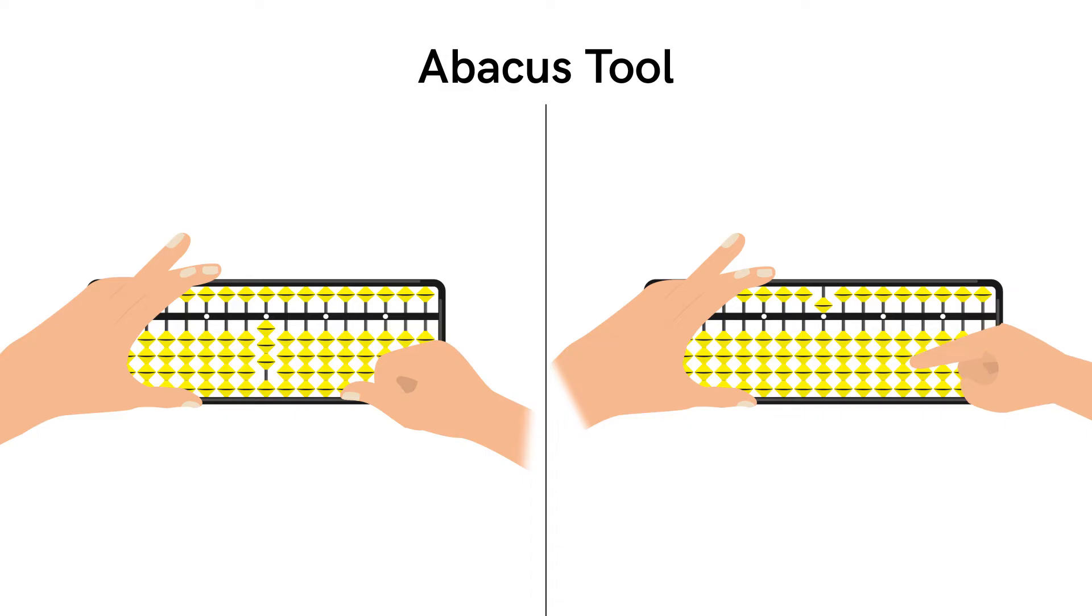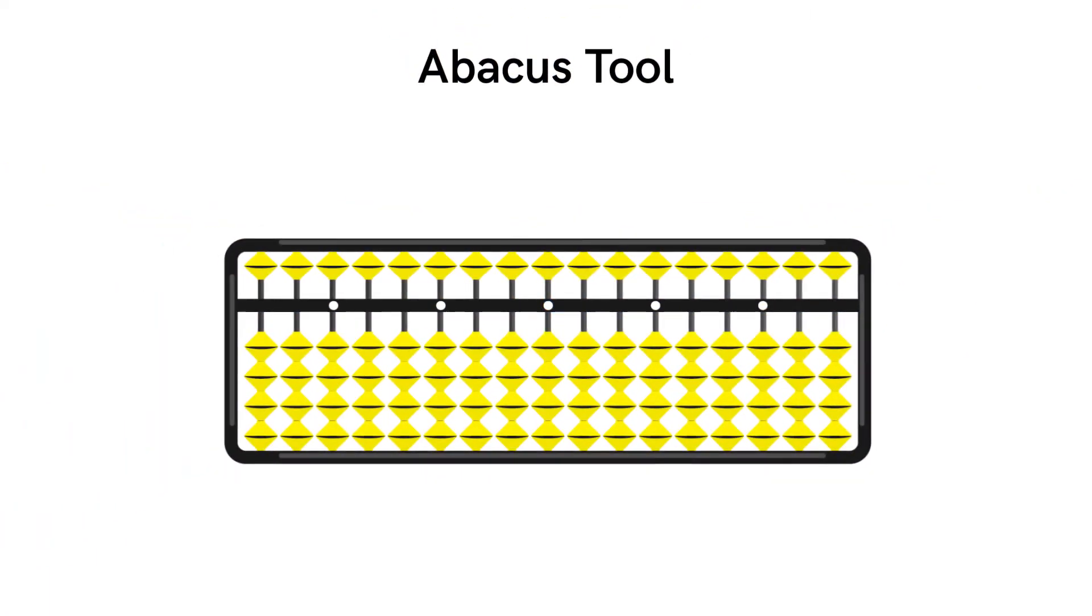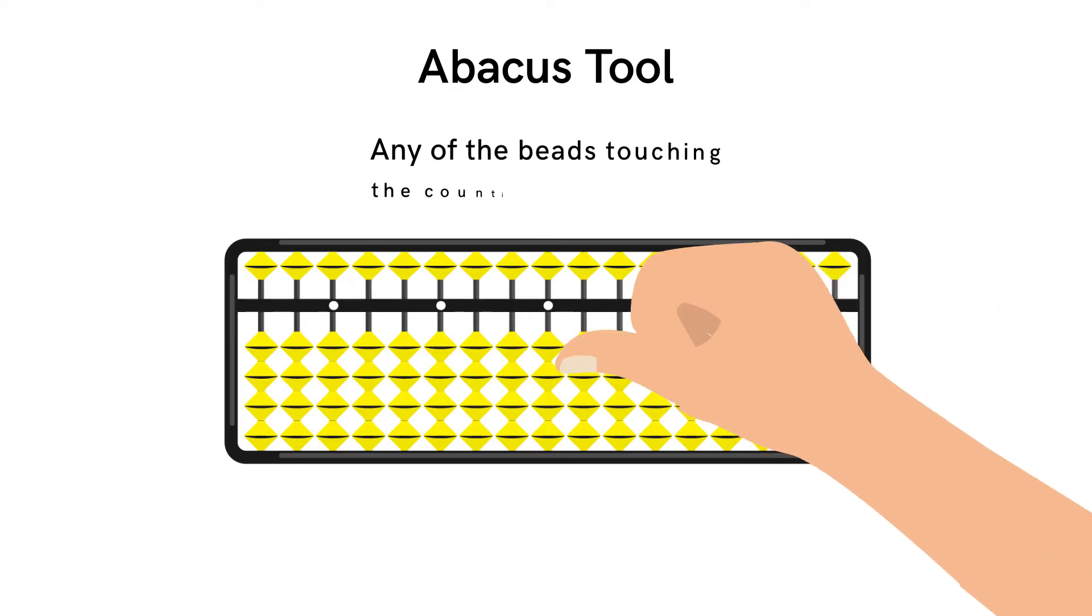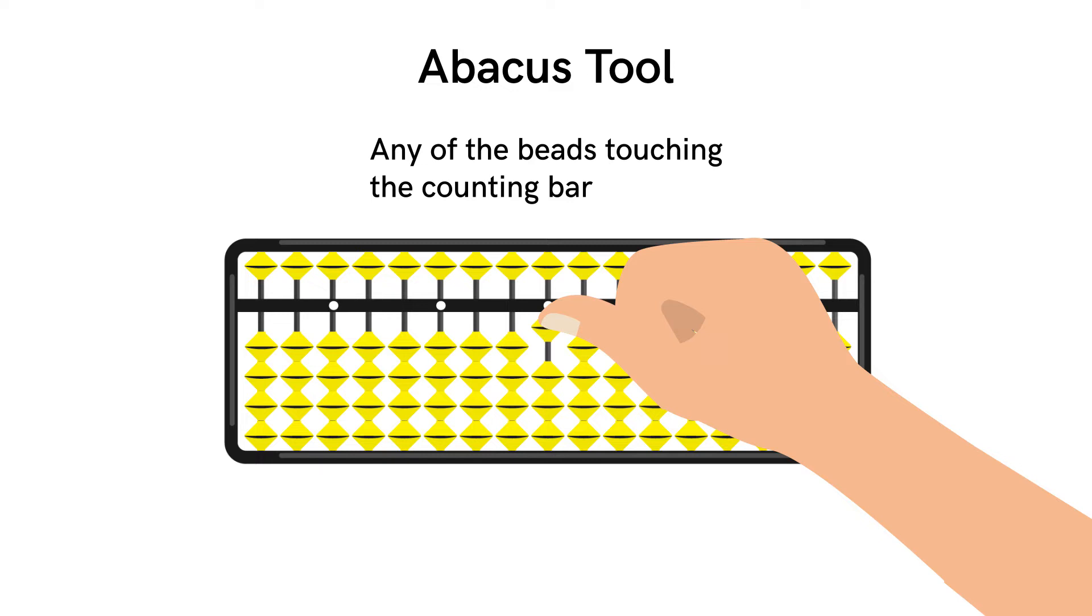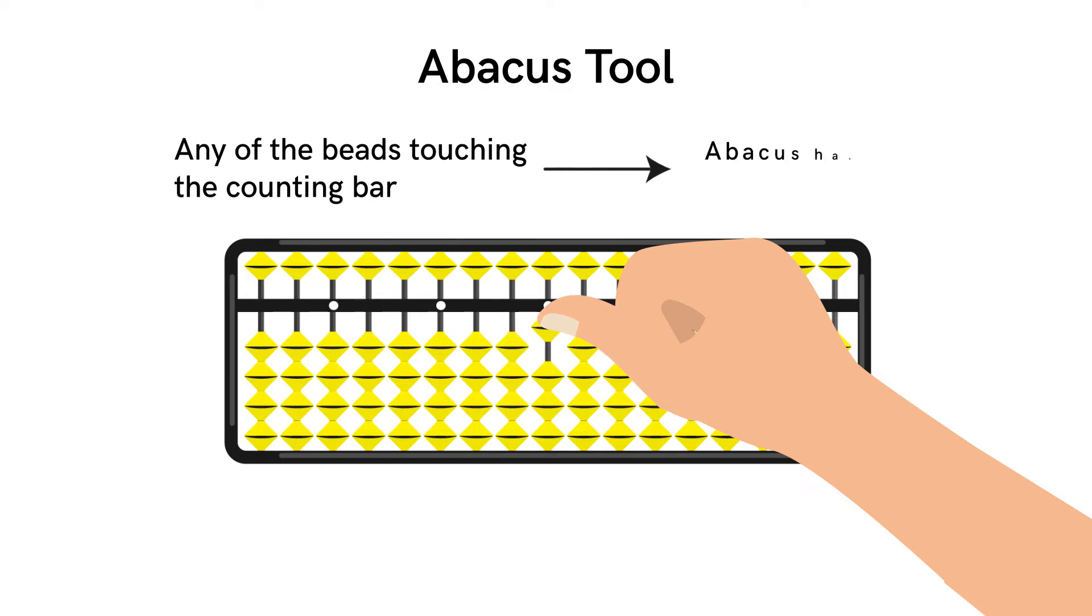Now let's move further and see how to use the tool. First we understand that if no beads are touching the counting bar, then the value of the abacus is zero. On the other hand, if any of the beads are touching the counting bar, it means that the abacus has some value.